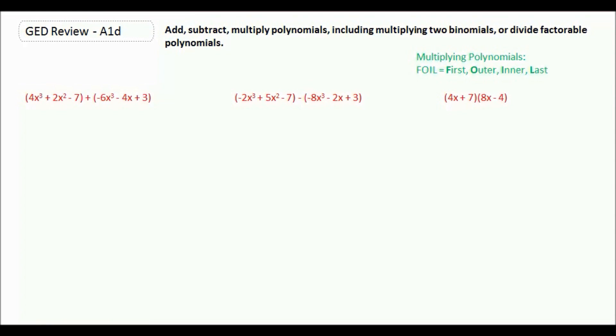If there's two terms, it's what's called a binomial. Three terms would be a trinomial, and anything more than that is just generally a polynomial.